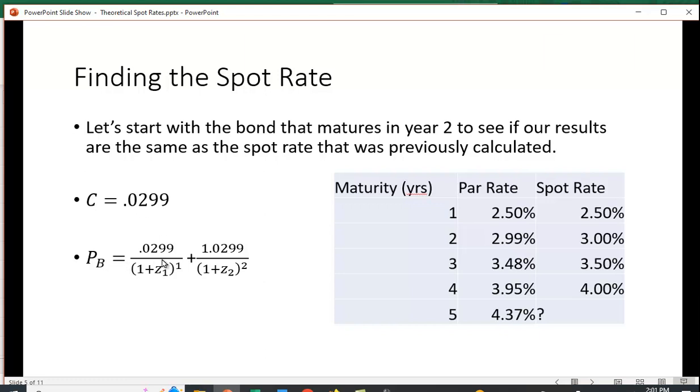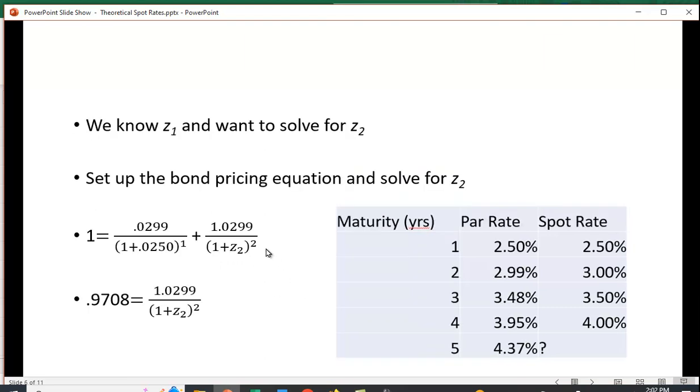The price of the bond equals the present value of that coupon, 0.0299, discounted by Z1, and then 1.0299, discounted by Z2 for two periods. We know what Z1 is, and we want to solve for Z2. We know the price of the bond, and it's the case that if you have one equation and one unknown, you can solve for it.